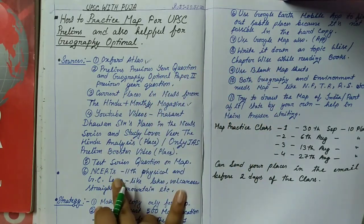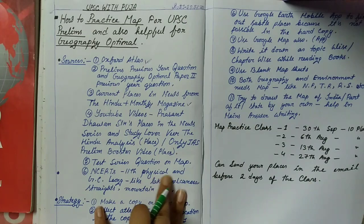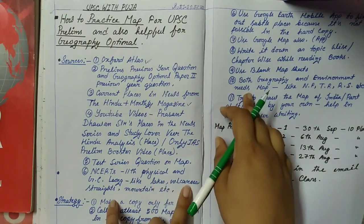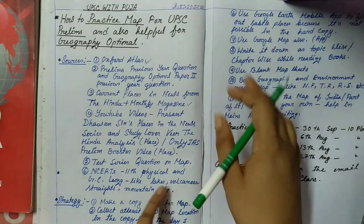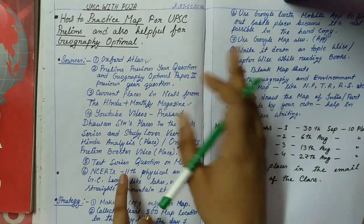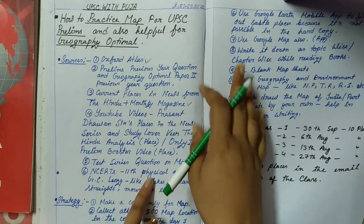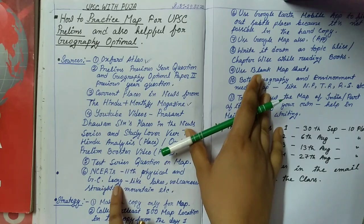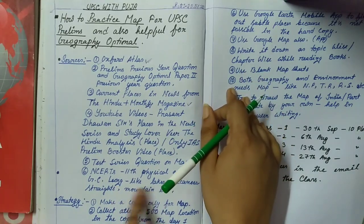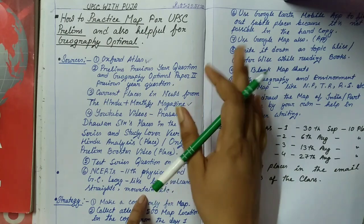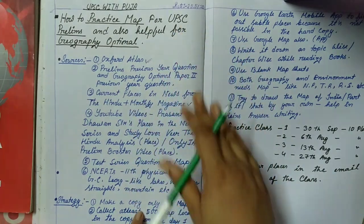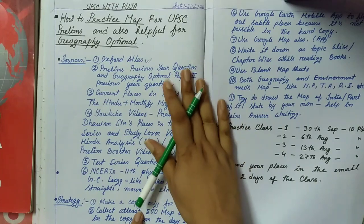Another source is the 11th class NCERT Physical Geography and GC Leong, which cover lakes, volcanoes, straits, mountains, and similar features for both India and the world. When you read these, you'll learn about these geographical features and you should mark them on the map as well. These are the overall sources you need to refer to for map practice.